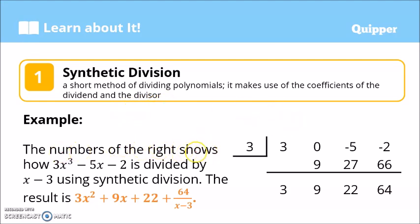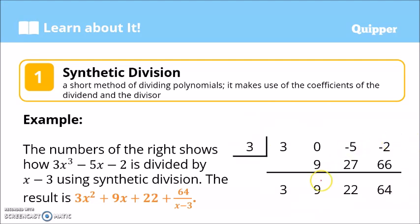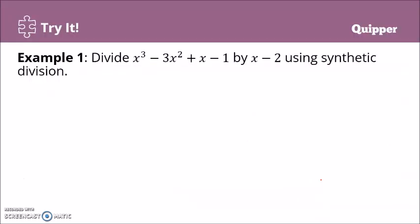For example, the numbers on the right show how 3x³ minus 5x minus 2 is divided by x minus 3 using synthetic division. The result is 3x² plus 9x plus 22 plus 64 over x minus 3. So how was that obtained? Let's work through an example.